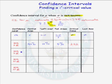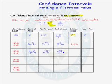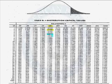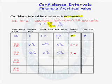Now let's consider another 90% confidence interval, but suppose our sample size was 6, so we have 5 degrees of freedom. Again, our central area is 90%, leaving 10% and 5% in each tail. Going to the t-table with 5 degrees of freedom and an upper tail probability of 0.05, our critical value for this problem is 2.015.